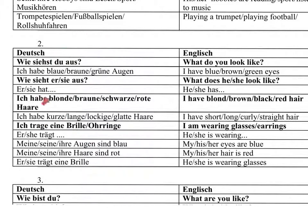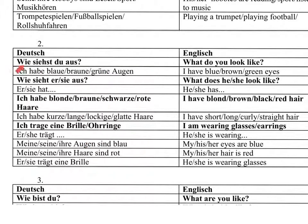Practice first of all the pronunciation here. Then cover the English side and look at the German. Say the words in English without looking at it, then the other way around — cover the German side, read the words in English and try to remember how to say that in German. Then simply look at the question and try to say about yourself as much as possible. Then look at the second question and try to say about your friend as much as possible. Good luck. Alles Gute. Tschüss.